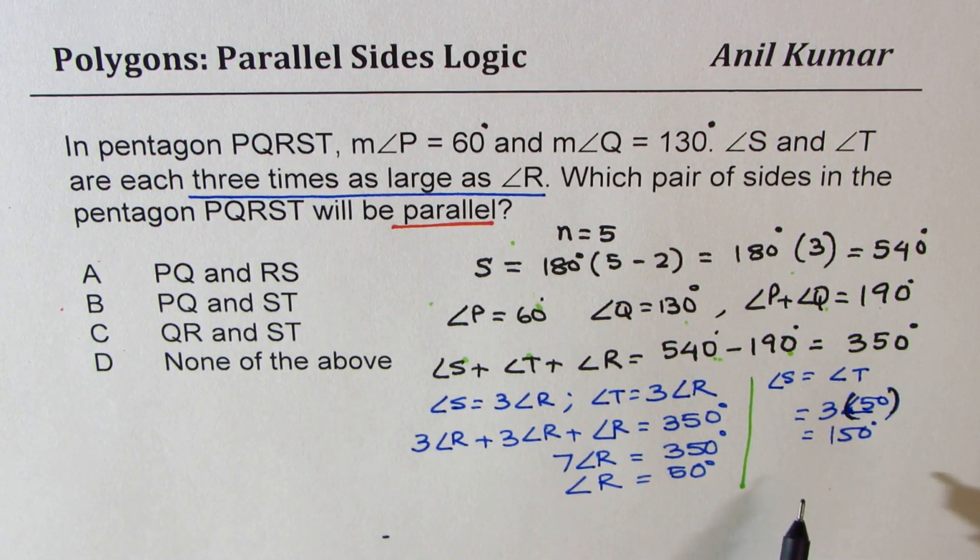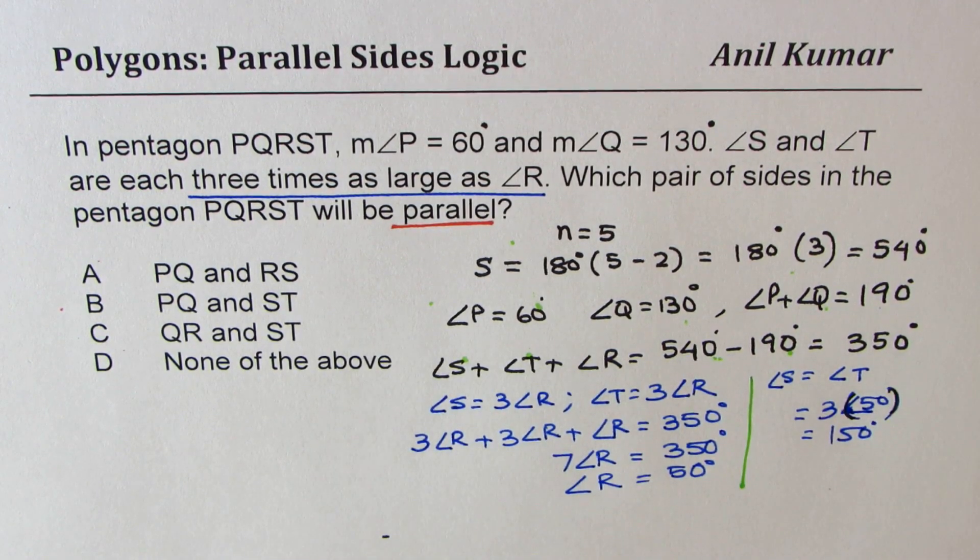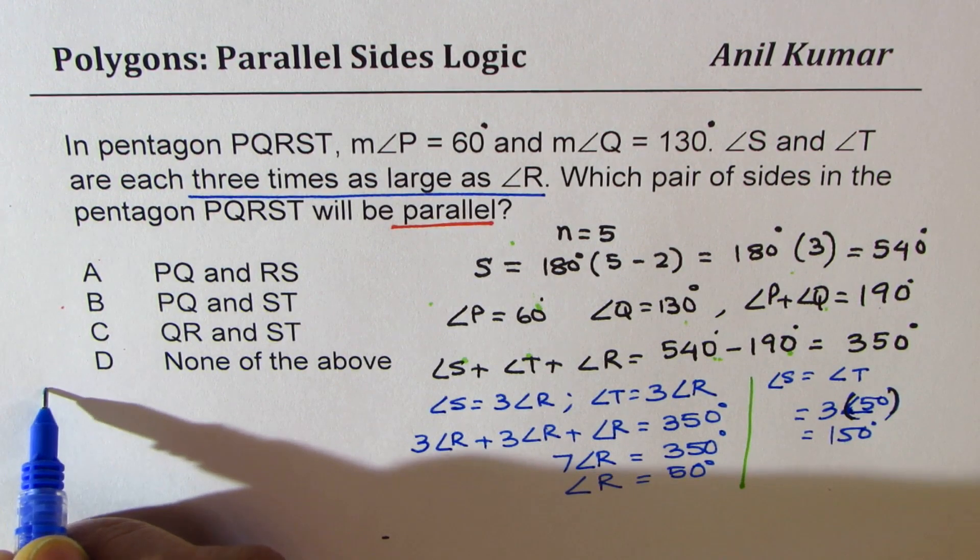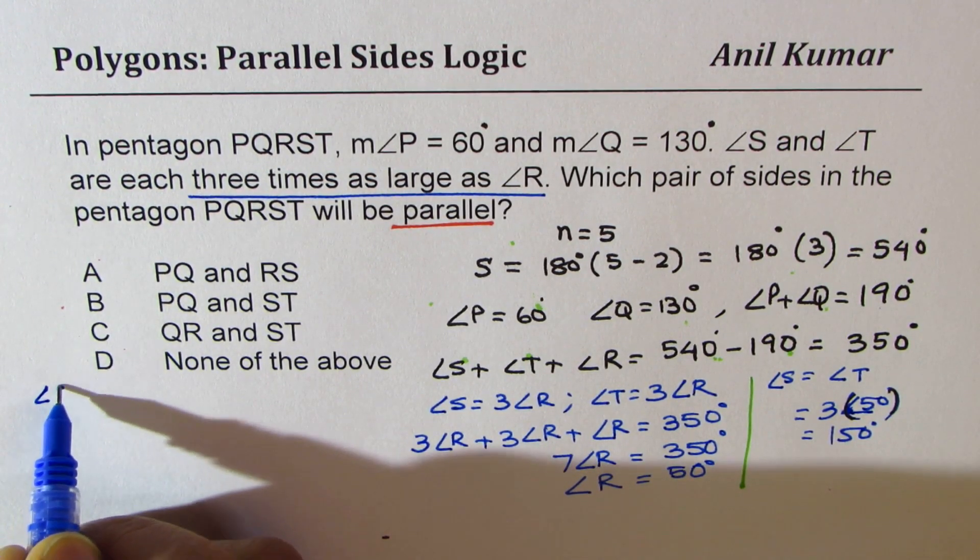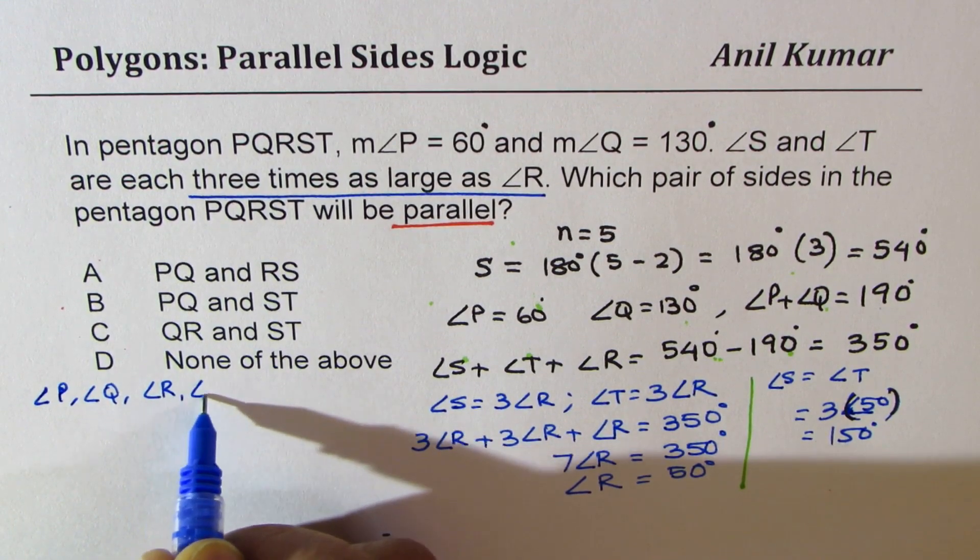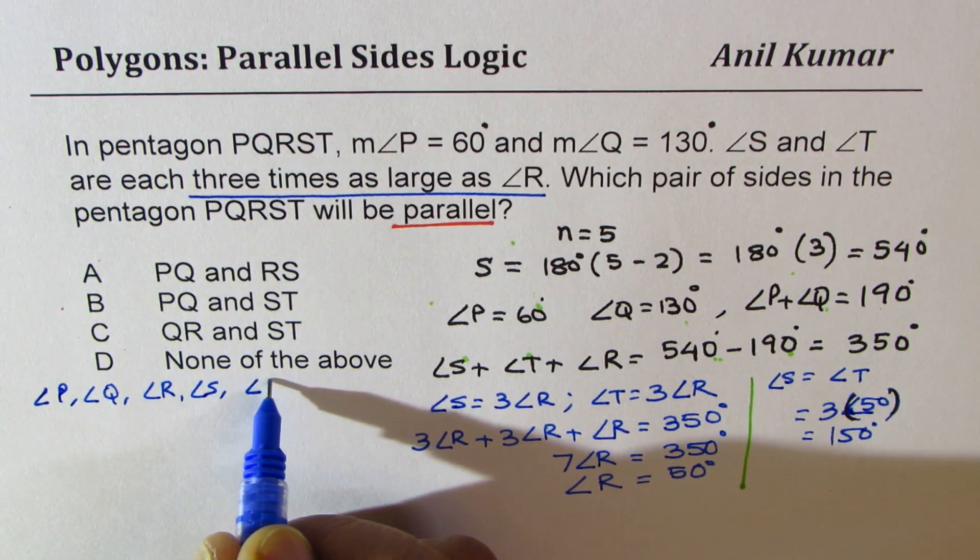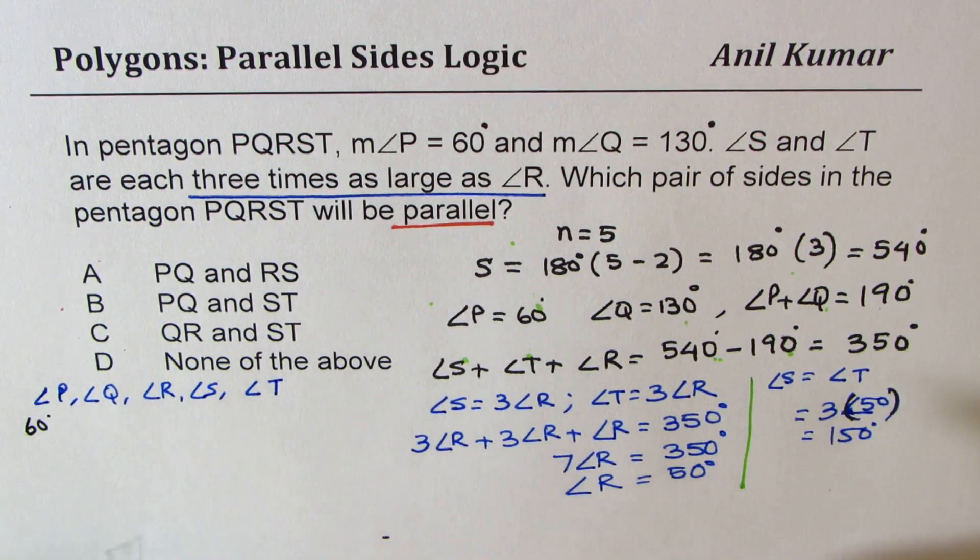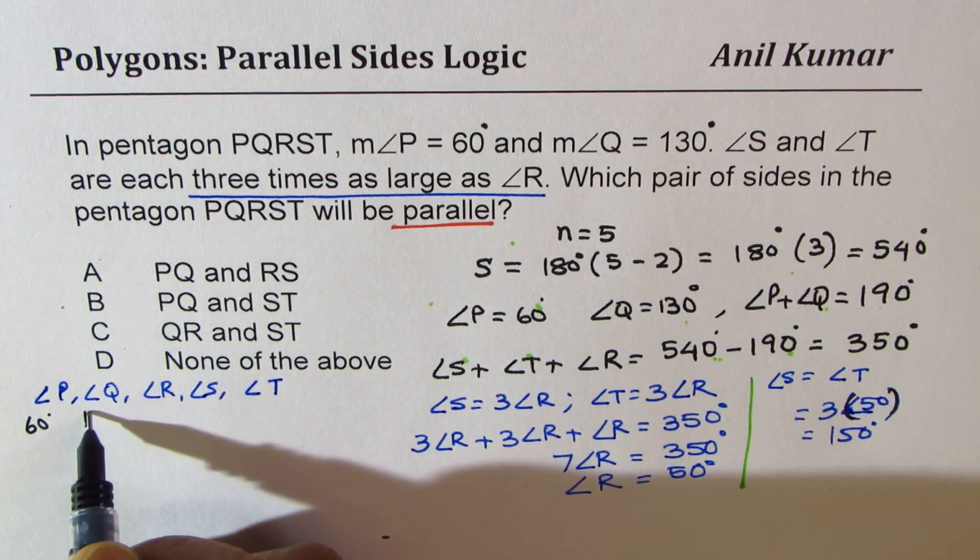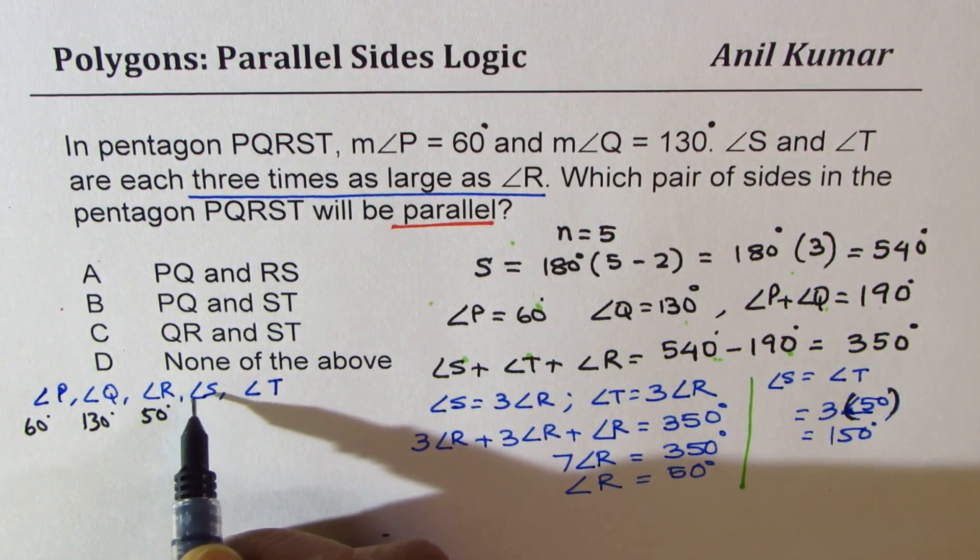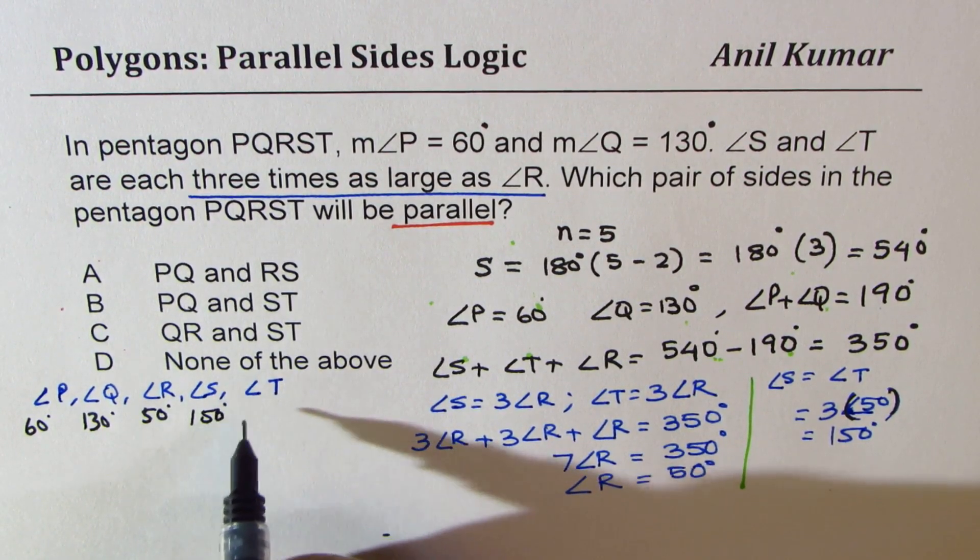So we get angles as, so angles for P, Q, R, S, and T are what? So we get this as 60 degrees. This is 60 degrees. Q is 130 degrees. Angle R is 50 degrees. And S and T are 150 each.